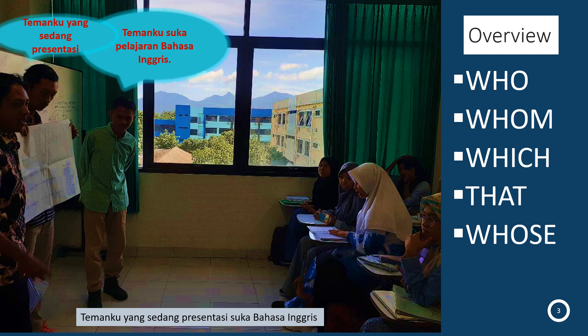Untuk orang, pakai 'who' untuk subjek, pakai 'whom' untuk objek. Untuk benda, pakai 'which' — bisa subjek maupun objek. Lalu 'that' — ini bisa untuk semua: benda, orang, subjek, maupun objek. So, if you are in doubt, kalau kalian ragu-ragu, just use 'that,' karena dia bisa untuk semuanya. Kemudian ada 'whose' — whose itu menunjukkan possession atau kepemilikan.